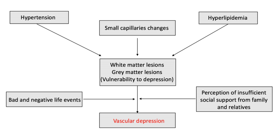There are several criticisms regarding the theory of vascular depression. One critique is with regard to the distinction between sufficient and necessary causes for vascular depression. A cause is considered sufficient if its presence is enough to lead to vascular depression, yet it is considered necessary if it is required to develop vascular depression. Some research claims that vascular brain disease is sufficient for the development of depression, but others have found that ischemic disease may not even be a sufficient causal factor.